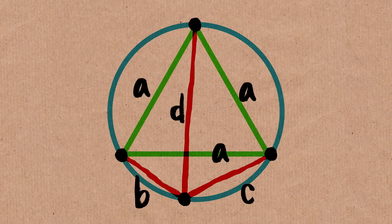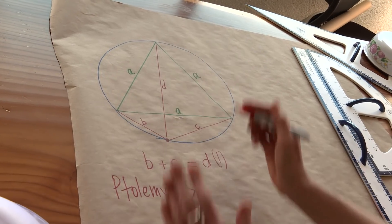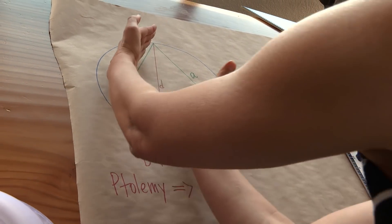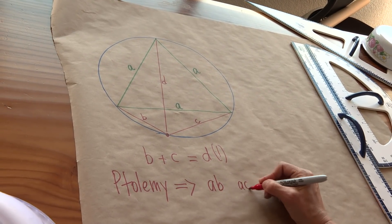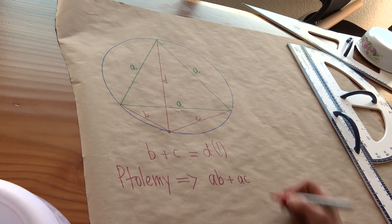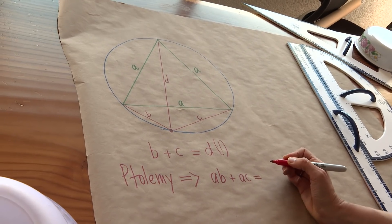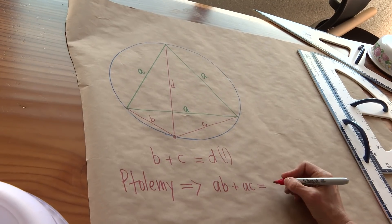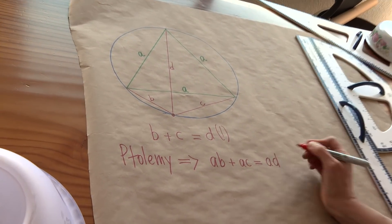So by Ptolemy's theorem, what do we have? The product of the opposite sides, A, B, and A, C. If I add those products, I must get the product of the diagonals. The green diagonal is A, the red diagonal is D, so we're going to get AD.